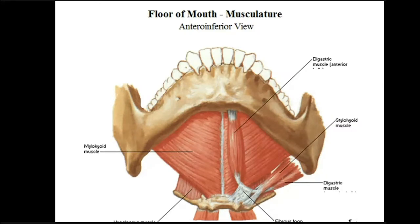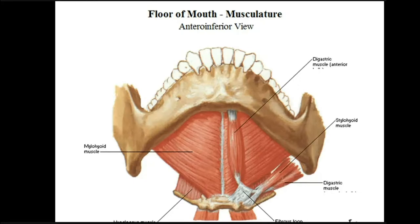Each mylohyoid muscle arises from the mylohyoid line. On the inner surface of the body of the mandible is the mylohyoid line on each side, and below this is the mylohyoid groove, with the submandibular fossa here. The fibers of the mylohyoid muscle pass medially toward the midline and slightly backward until they meet with each other in the median raphe. The most posterior fibers become attached to the upper border of the body of the hyoid bone.